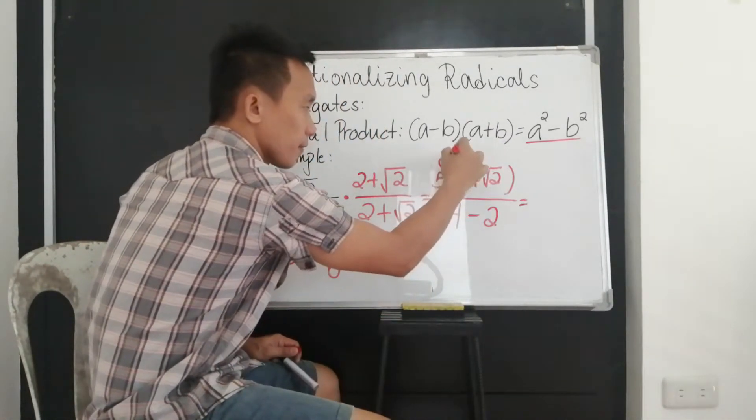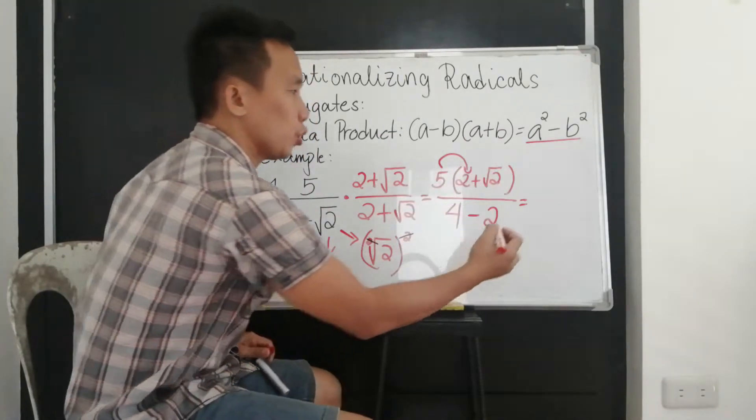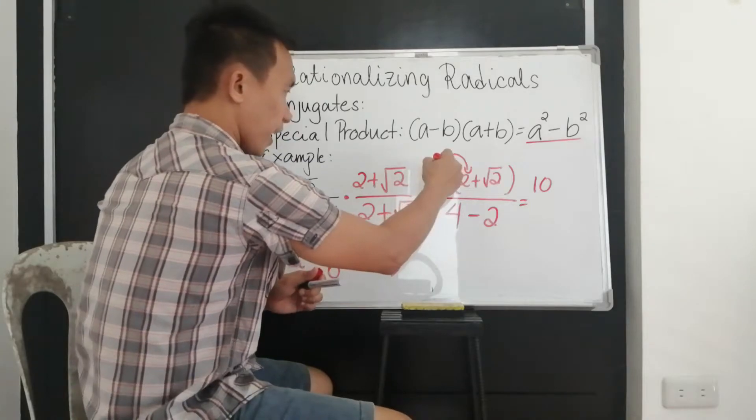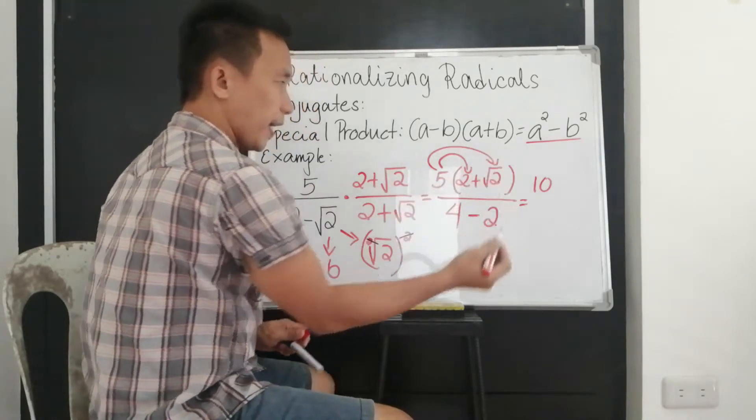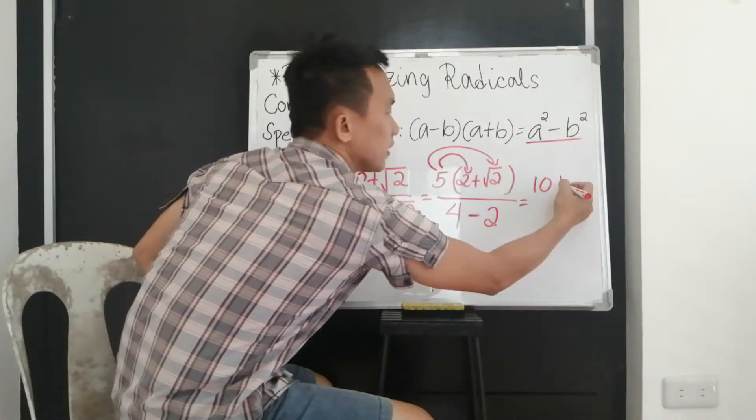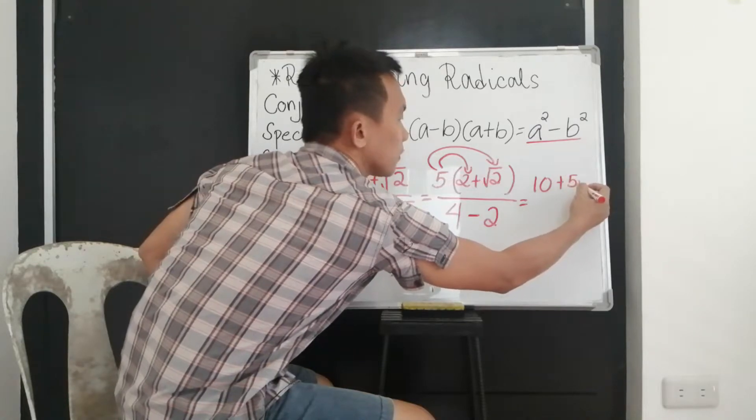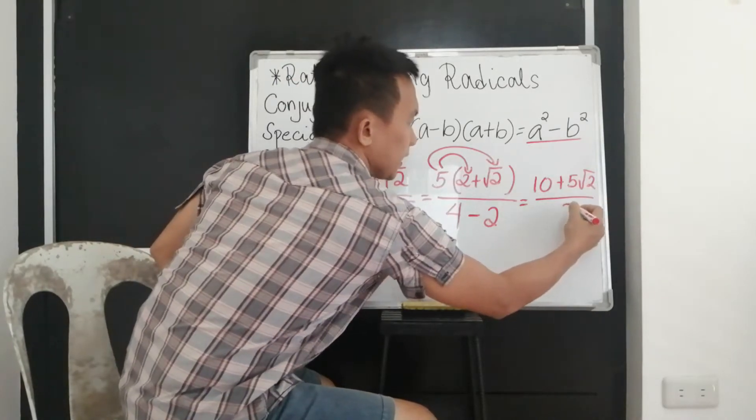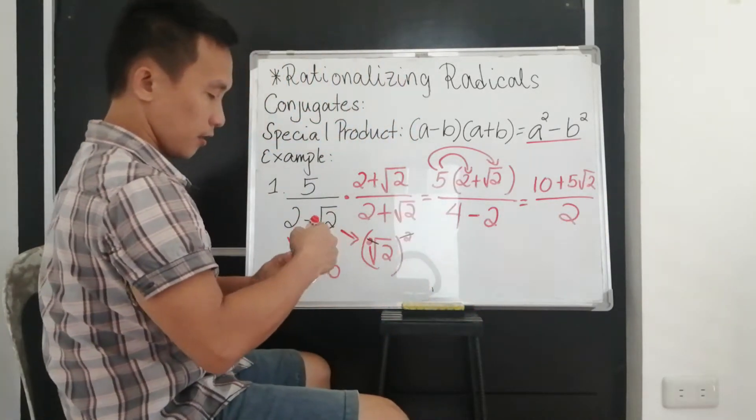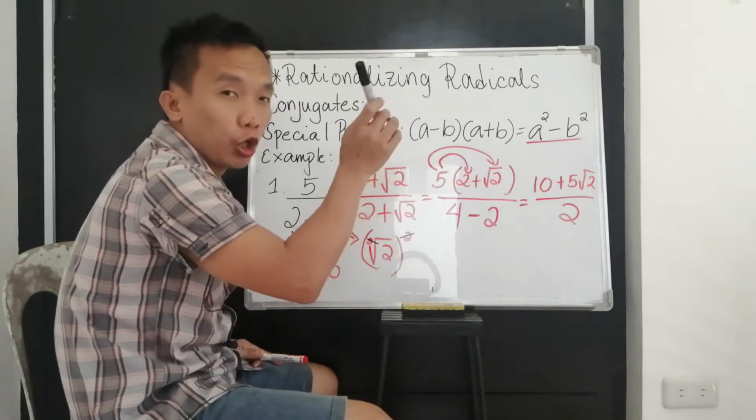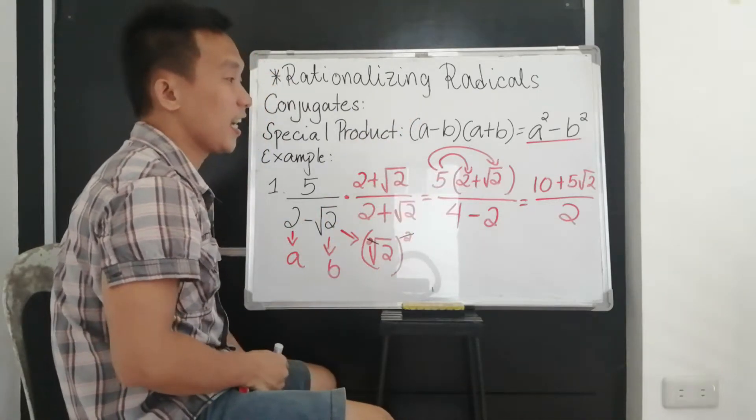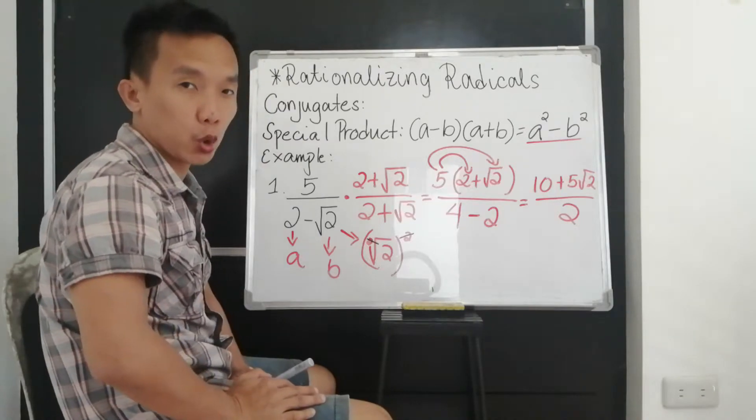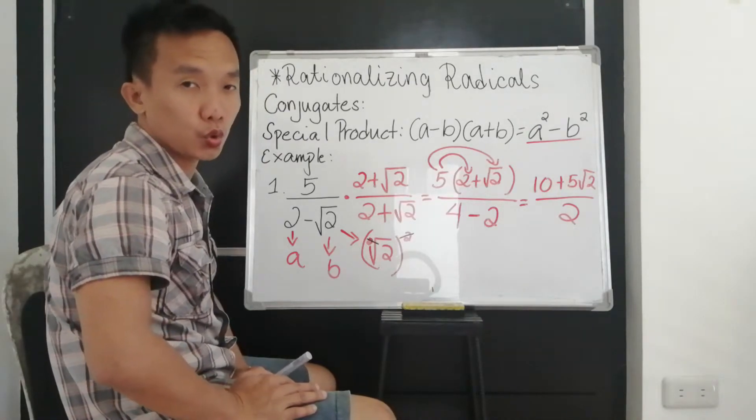So what we're going to get is the number 2. And if you're going to multiply that, so 5 multiplied to 2, that's 10. And 5 multiplied to square root of 2, that's 5 square root of 2. Then 4 minus 2, that is 2. So this is now your final answer. That's 10 plus 5 square root of 2 over 2.